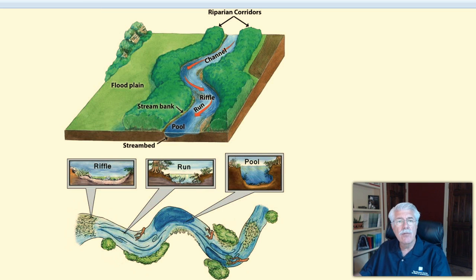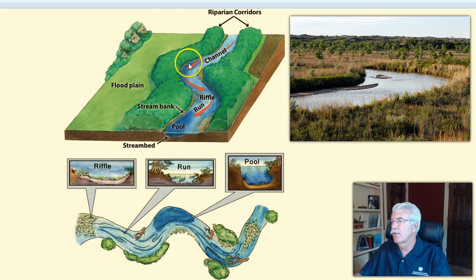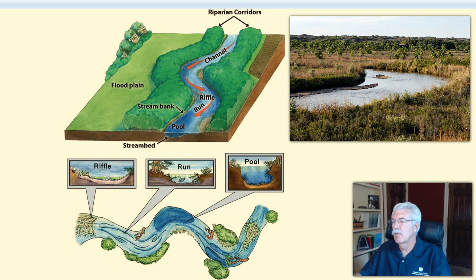When there's a sharp curve in the river, the strongest current and deepest water moves to the outside edge of the curve. In flowing water, there is less current near the bottom.